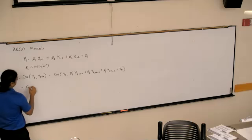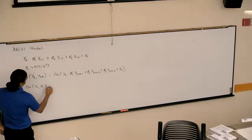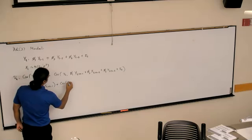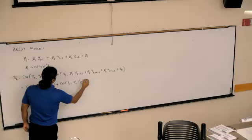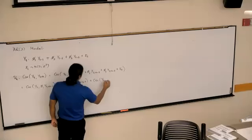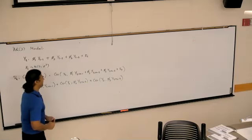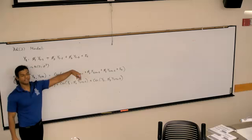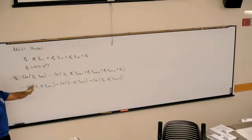So what would be covariance of YT comma phi 1 YT plus H minus 1, plus the covariance of YT comma phi 2 YT plus H minus 2, plus the covariance of YT comma phi 3 YT plus H minus 3. The last term is the covariance of YT epsilon T, and what is that covariance? Zero. So we can just ignore that.